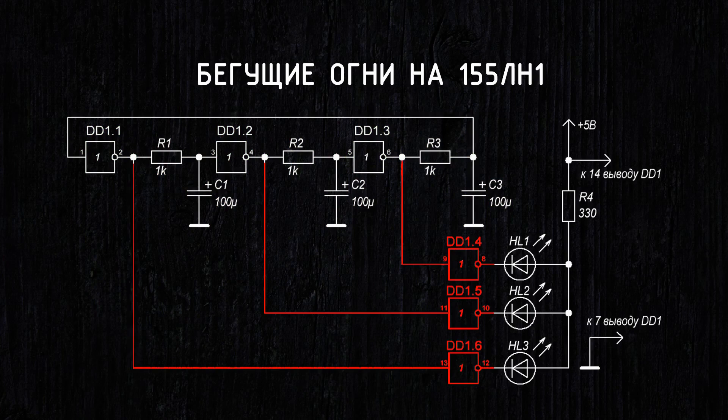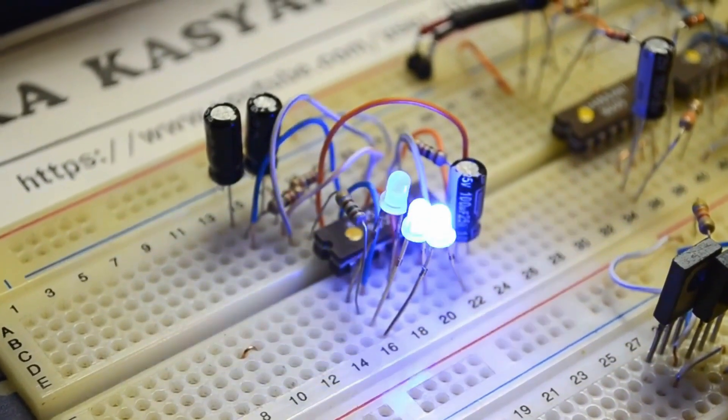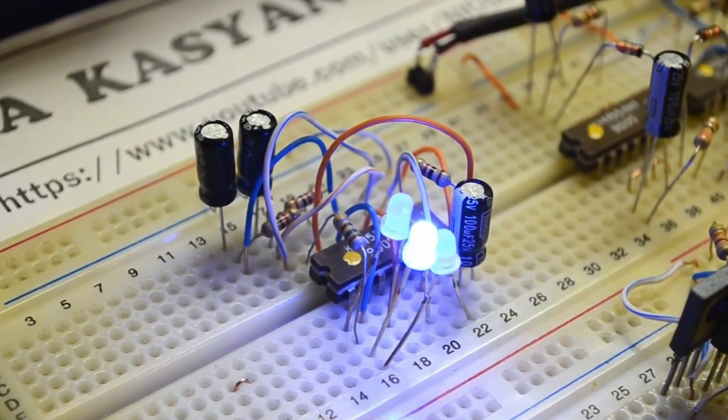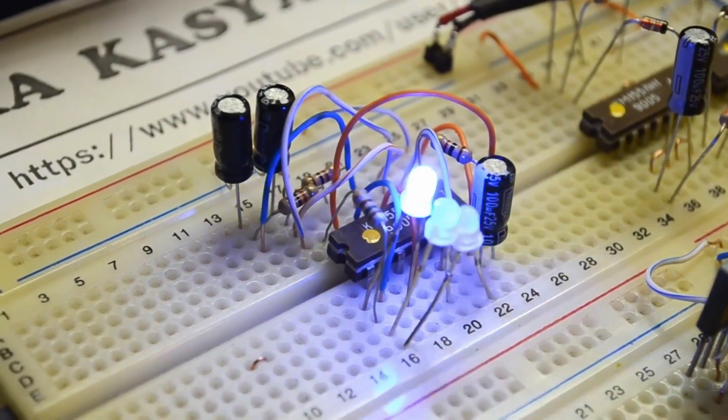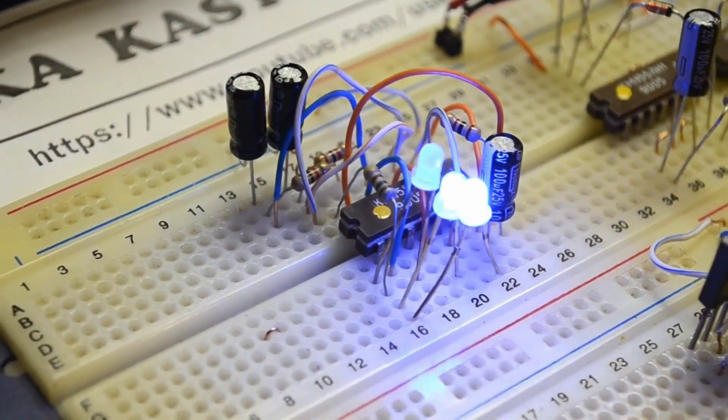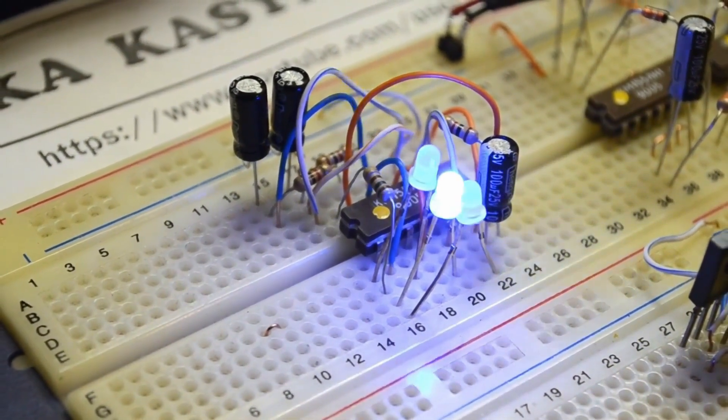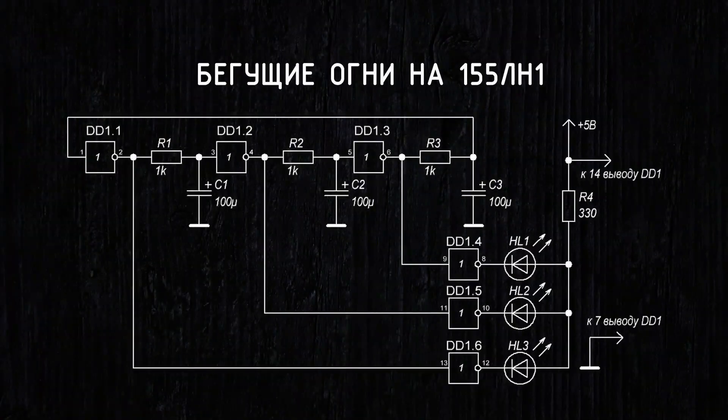As a result, a logical 0 will alternately appear at the outputs of elements 4, 5, and 6, causing the LEDs connected to these outputs to light up in sequence. Instead of LEDs, you can install any load by adding a power switch to the circuit.